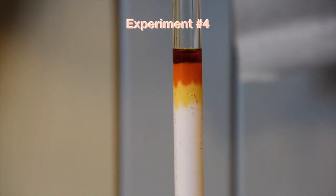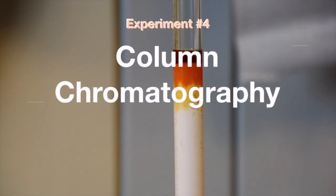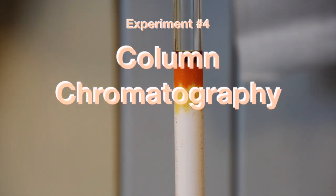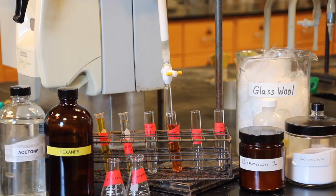Column chromatography is an excellent way to separate the components of a mixture, and it is often used to purify one or more compounds found in a mixture. The principle behind the separation is the same as in other forms of chromatography.